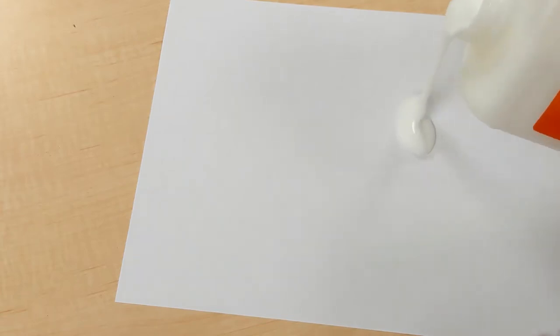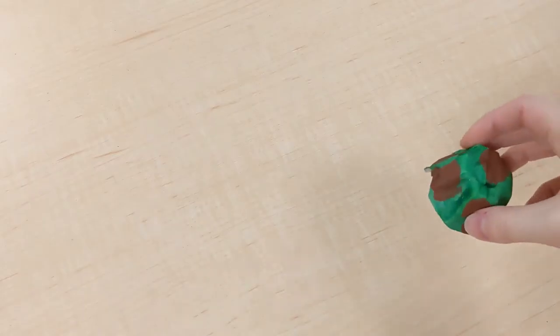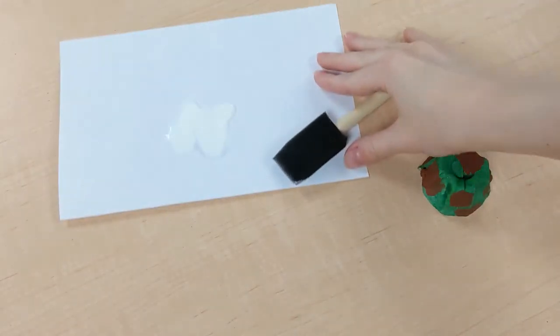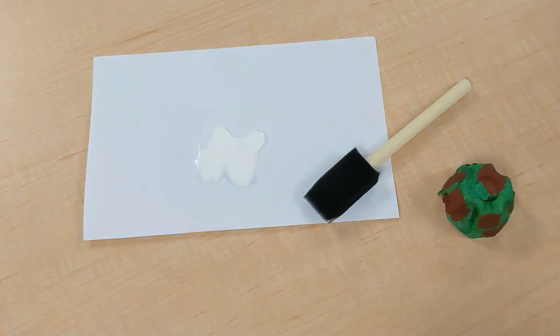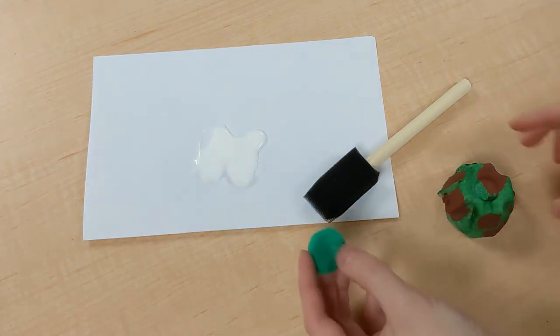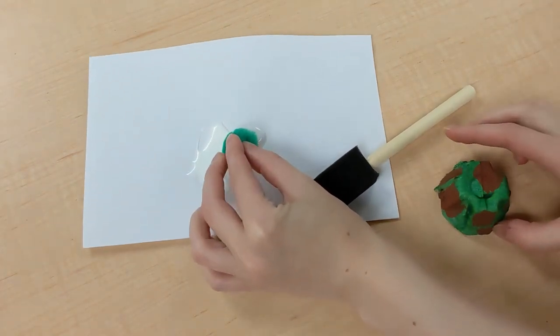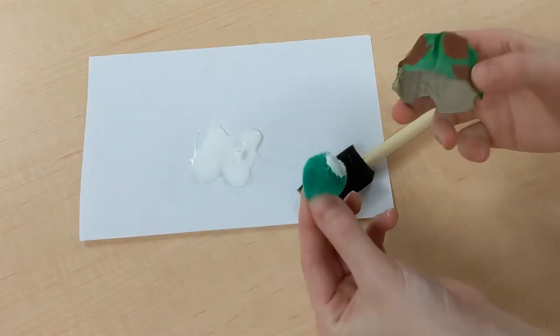Next up, we need some glue. Find your green pom pom and glue it onto the turtle to give it a head.